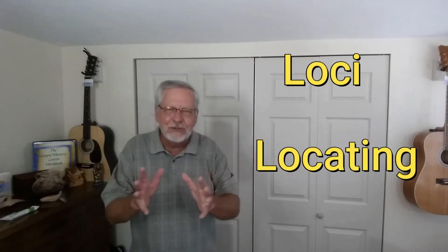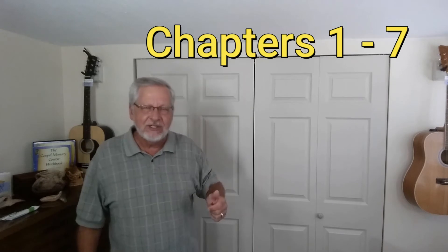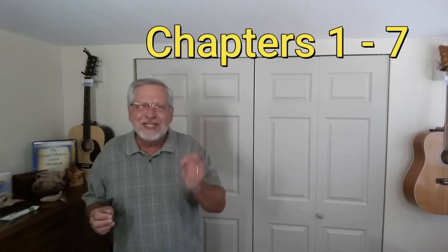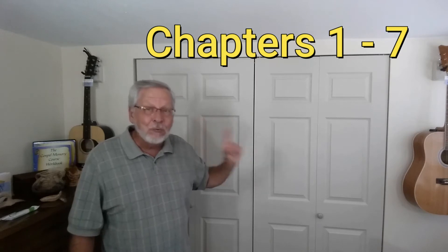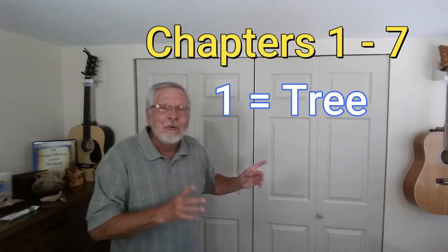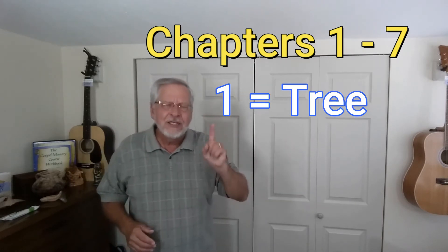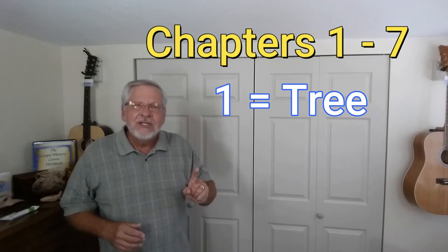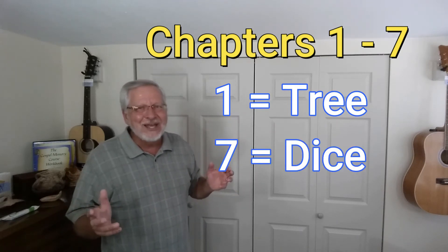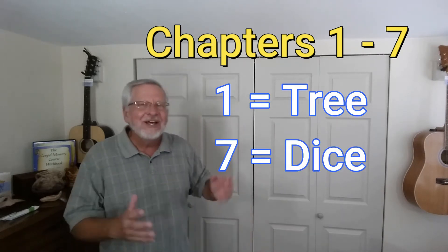The numbers we use will relate to the chapters we're remembering as we walk through the book of Leviticus. We're going to remember chapters 1 through 7. There is a specific picture for each number. Number 1 is always a tree, because a number 1 looks like the trunk of a tree. Number 7 is dice — think of lucky number 7, or 7 come 11.